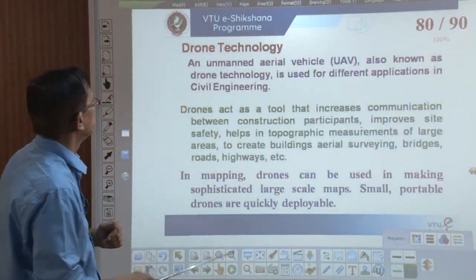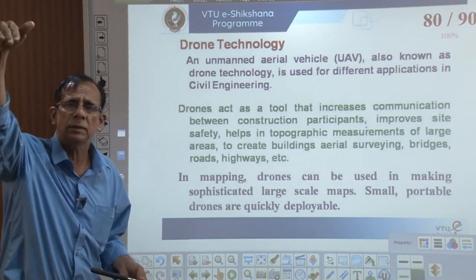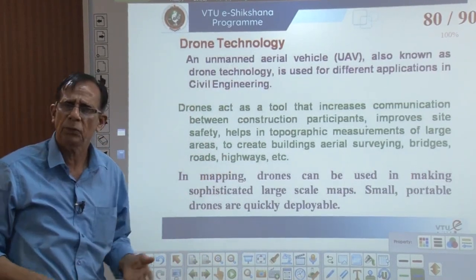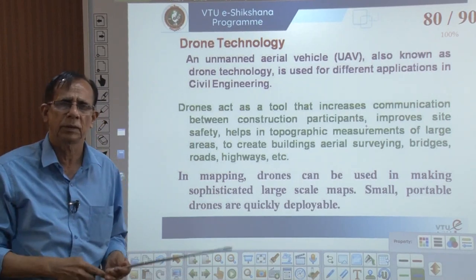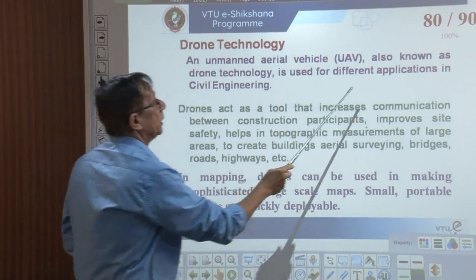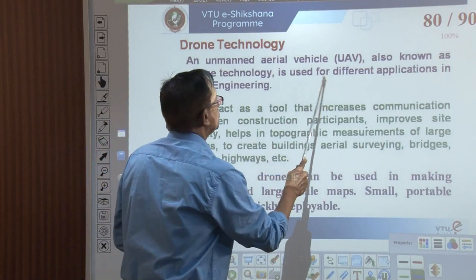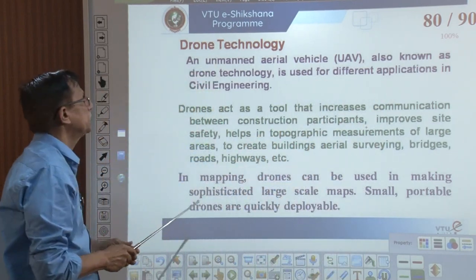What exactly is drone technology and how best can we explore it for our engineering activities? We shall try to learn briefly about drone technology. It is an unmanned device — no person is sitting in it, like satellite image aerial photography — everything is automatic. An unmanned aerial vehicle, also known as a drone, is used for different applications in civil engineering.